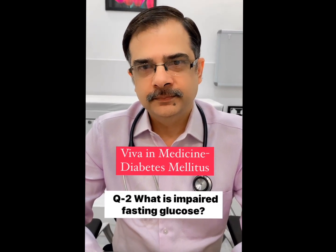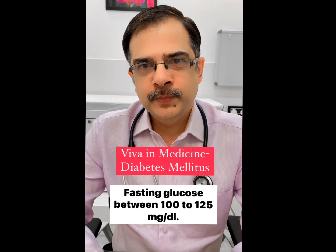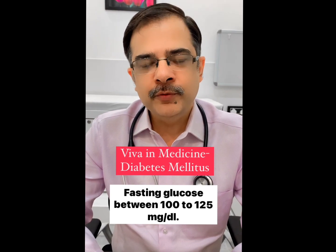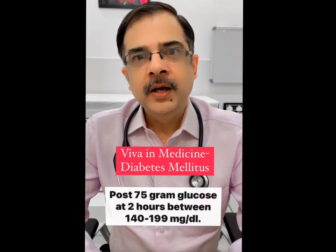What is impaired fasting glucose? Fasting glucose between 100 to 125. What is impaired glucose tolerance?